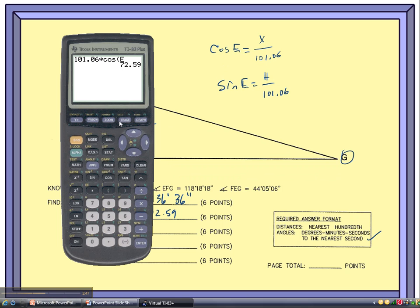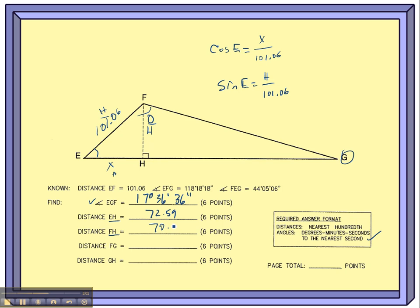So if you realize that, it'll save you some time on the calculator by just hitting second enter to pull that up, and then scroll over to this cosine and make it a sine. Hit enter, and there's my next number, 70.31.